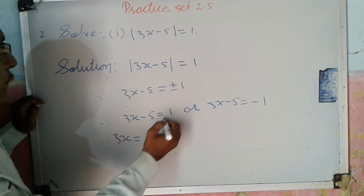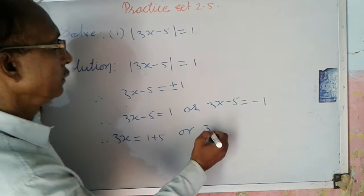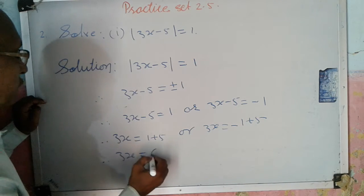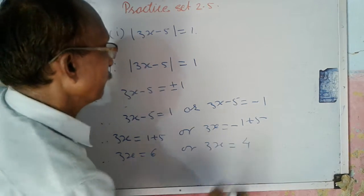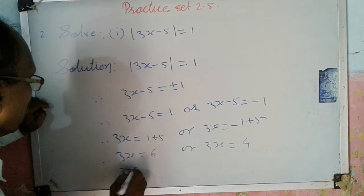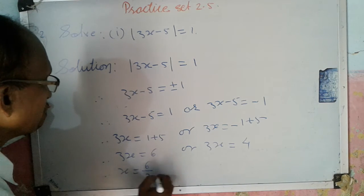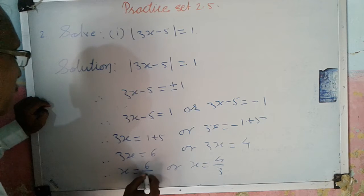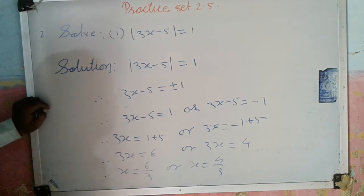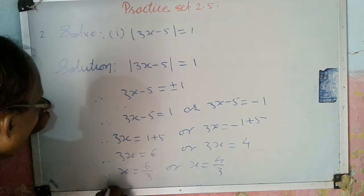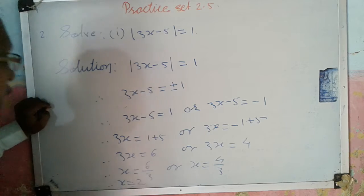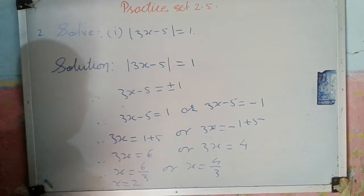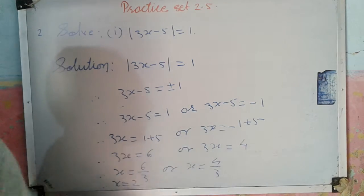Therefore, 3x equals 1 plus 5, or 3x equals minus 1 plus 5. So 3x equals 6, or 3x equals 4. Therefore x equals 6 upon 3, or x equals 4 upon 3. That means x equals 2, or x equals 4 upon 3. So our answer is x equals 2 or x equals 4 upon 3.